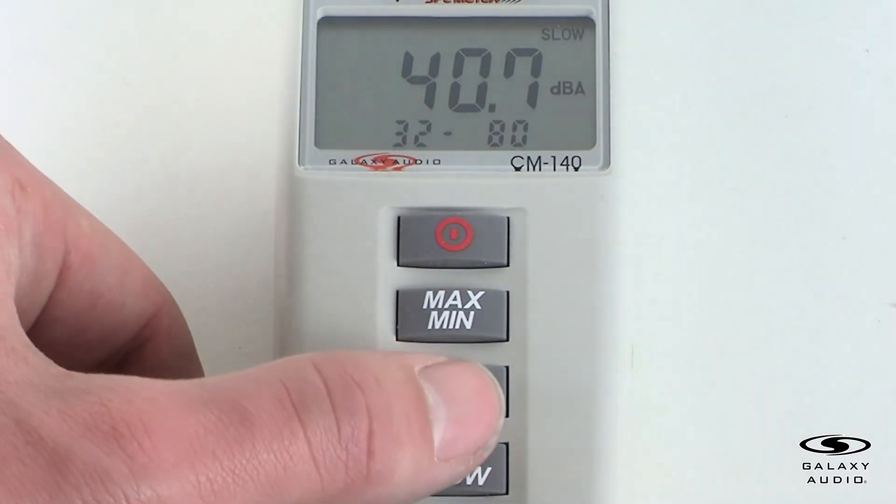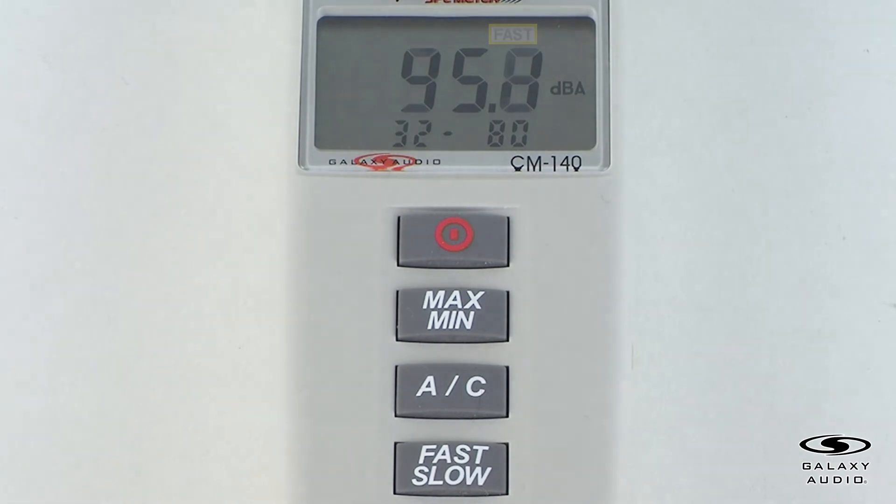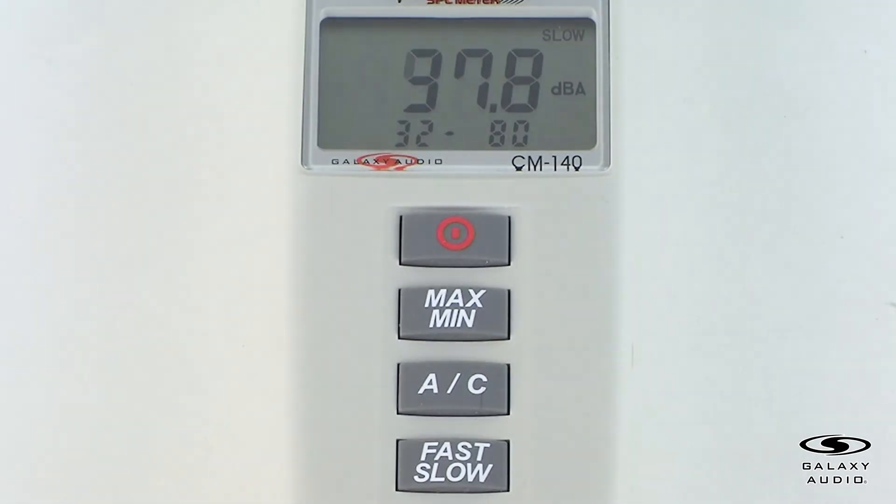For the time weighting select button, the fast setting is for normal measurements and gives better indication of peaks. The slow setting is for checking average levels of fluctuating noise.